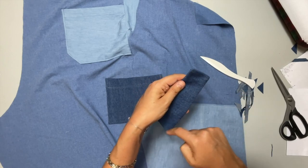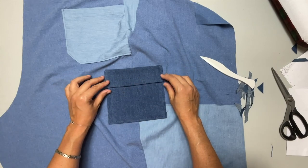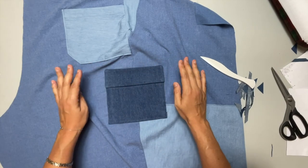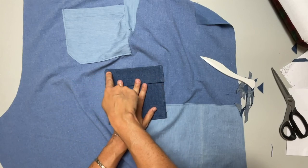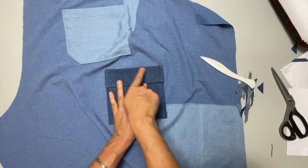So we are going to edge stitch around the bottom three. So decide how you want this to be oriented. And the bottom three, and then we're going to top stitch this onto the pants along the top edge.